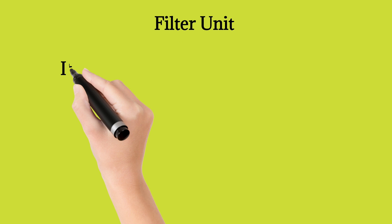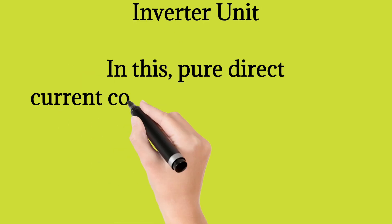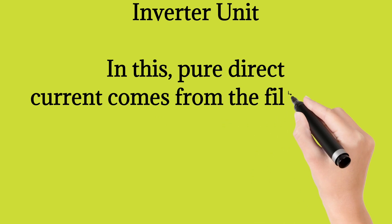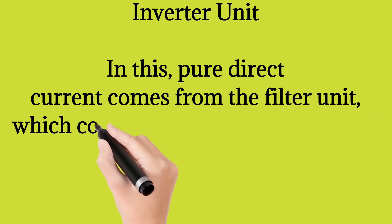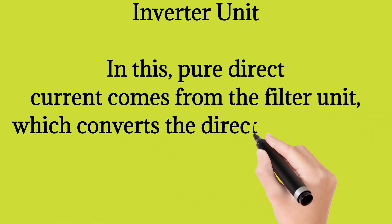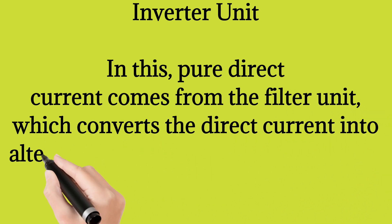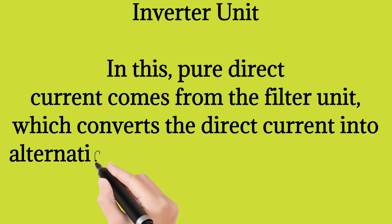Inverter unit: in this, pure direct current comes from the filter unit, which converts the direct current into alternating current, which we then get at the output.